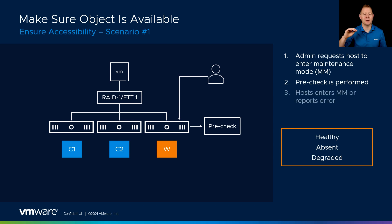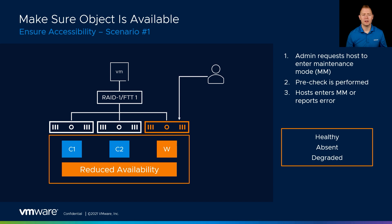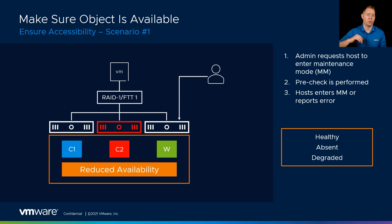Once you put that host in maintenance mode, our witness component goes into an absent state. Because it's no longer available, our object is in a reduced availability state because we're missing that one component. This is where something you should keep in the back of your mind — we've just cashed in our get-out-of-jail-free card, we've used our one failure tolerance. If we have another failure — say a disk fails on host 2 — we have what's called a double fault, because we suffered more failures than we were designed to tolerate. In that case, our best course of action would be to bring the host out of maintenance mode to bring us above that 50% watermark.